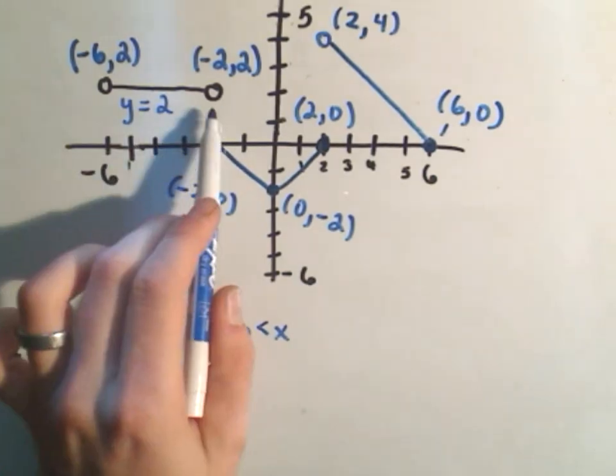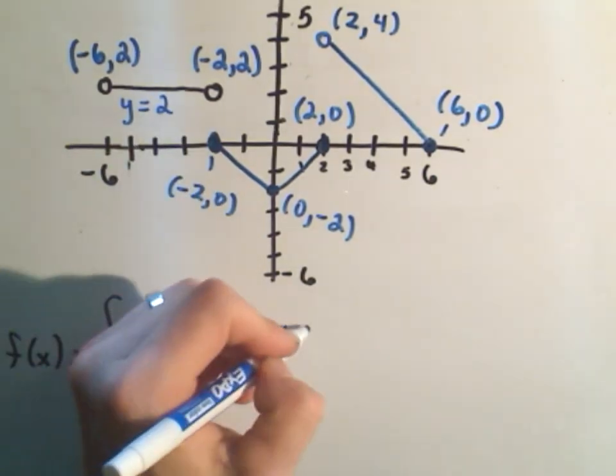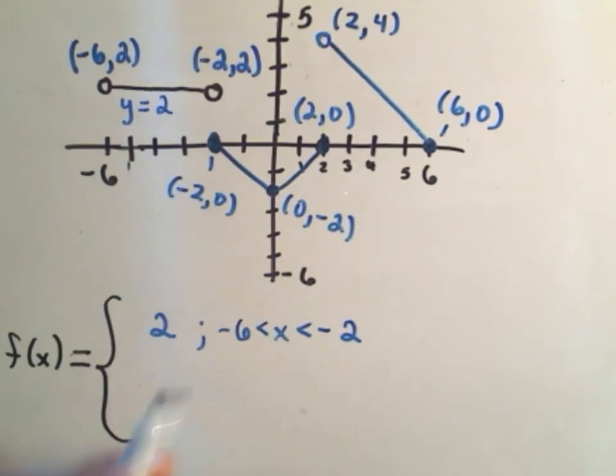So it goes from -6 up to an x coordinate of -2. So it looks like the flat line y equals 2 between the x coordinates of -6 and -2. And that's what we have.